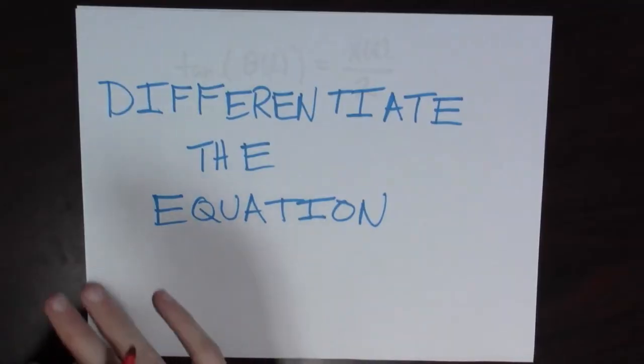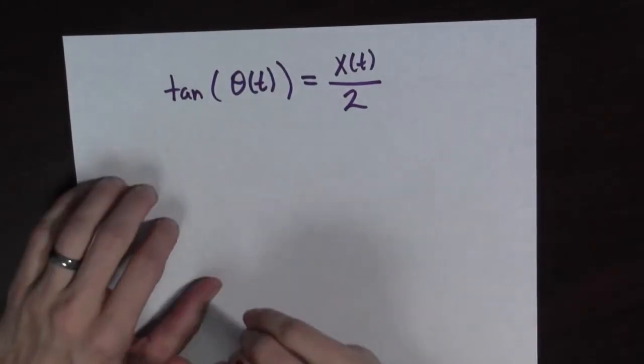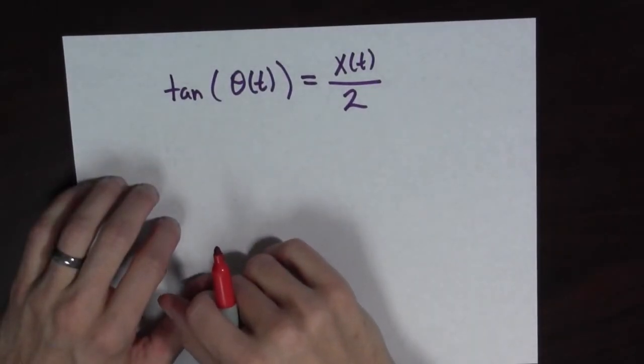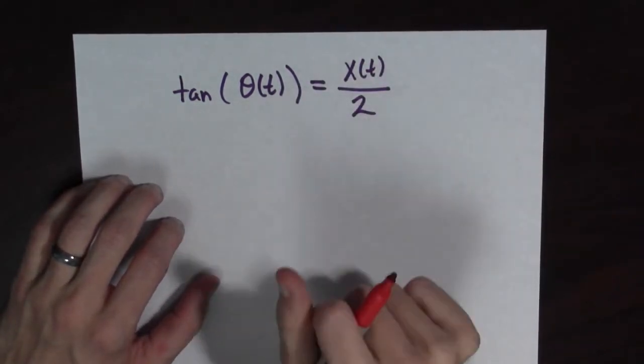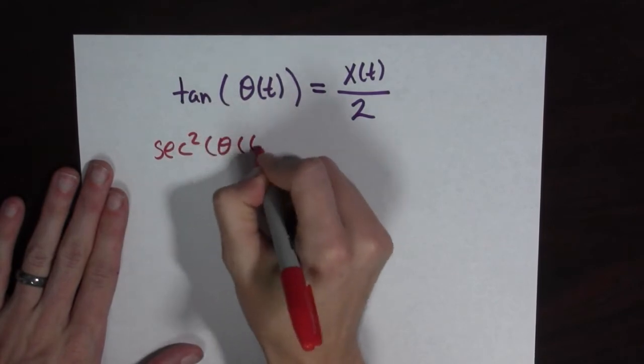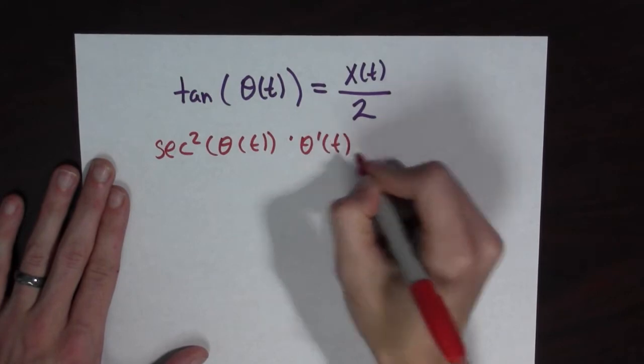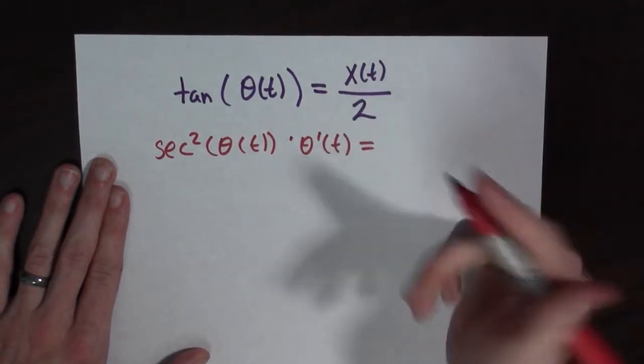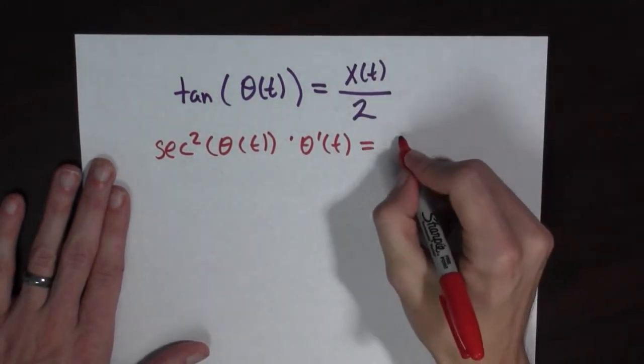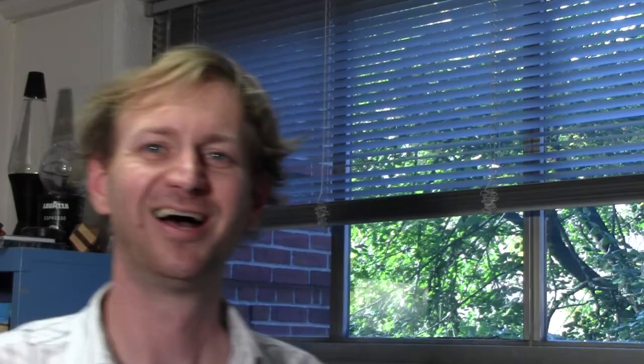Now that we have our equation, we should differentiate the equation. Alright, so we're going to take our equation and differentiate the whole thing with respect to t. So we're going to be using the chain rule. The derivative of tangent is secant squared θ(t) times θ'(t). And this is just x(t) times a constant, one half. So this is just x'(t) over 2.